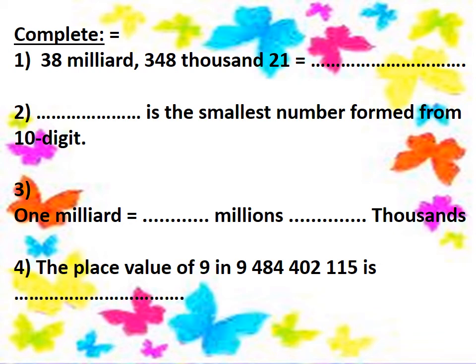Complete: thirty-eight million, three hundred forty-eight thousand, twenty-one. We put the home of millions, thousands, and units. In the millions home we have thirty-eight, with zeros for the empty million places. In the thousands home we have three hundred forty-eight, and in the units home twenty-one, with zeros in the hundreds place.